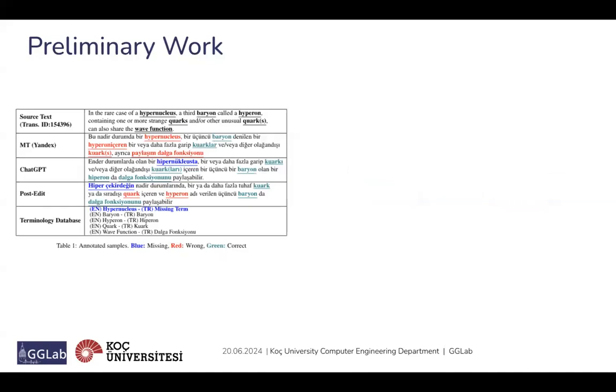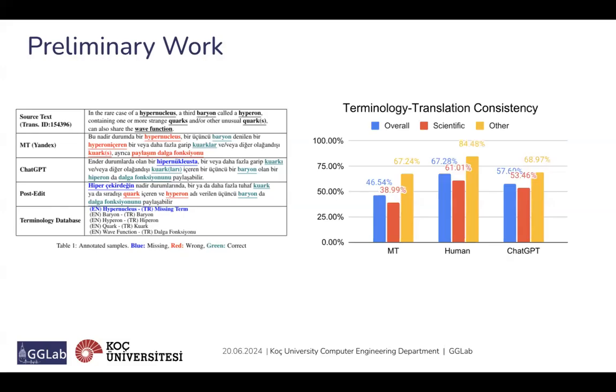Continuing with our preliminary work, we conducted an in-depth analysis of translation consistency. This table shows annotated samples from different translation sources, including machine translation engines such as Yandex and Google, ChatGPT, and post-edited translations. The source text describes a hypernucleus and its components. The table lists translations from Yandex, ChatGPT, and post-edited versions, along with the corresponding terms in the terminology database.